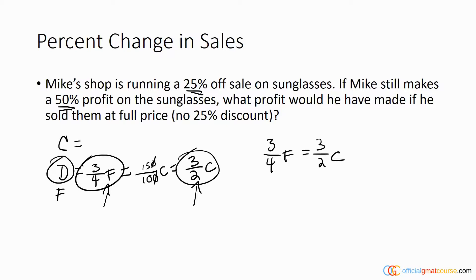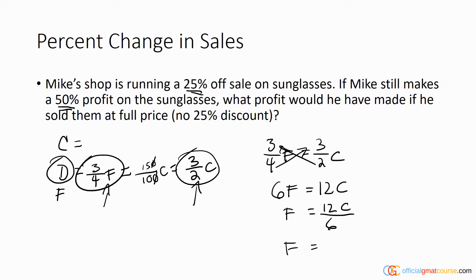If I cross-multiply the four and the two, I get 6F equals 12C, which means F equals 12C over 6, so F equals two times C. If F equals two times C, that's the same as 200% of C, which means it's a 100% increase — so at full price we would have earned a 100% profit.